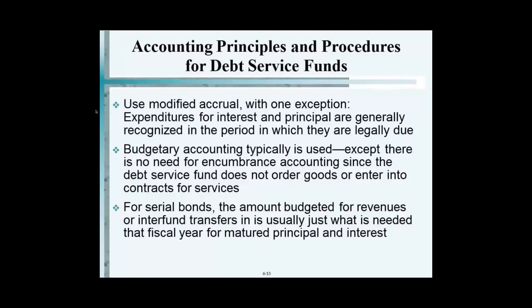Let's assume you have a bond which pays interest on October 1 and April 1. Your year-end is December 31st. What would you do in a business enterprise on December 31st? You'd calculate interest accrual for three months, from October 1 through December 31st. Under modified accrual basis? No.